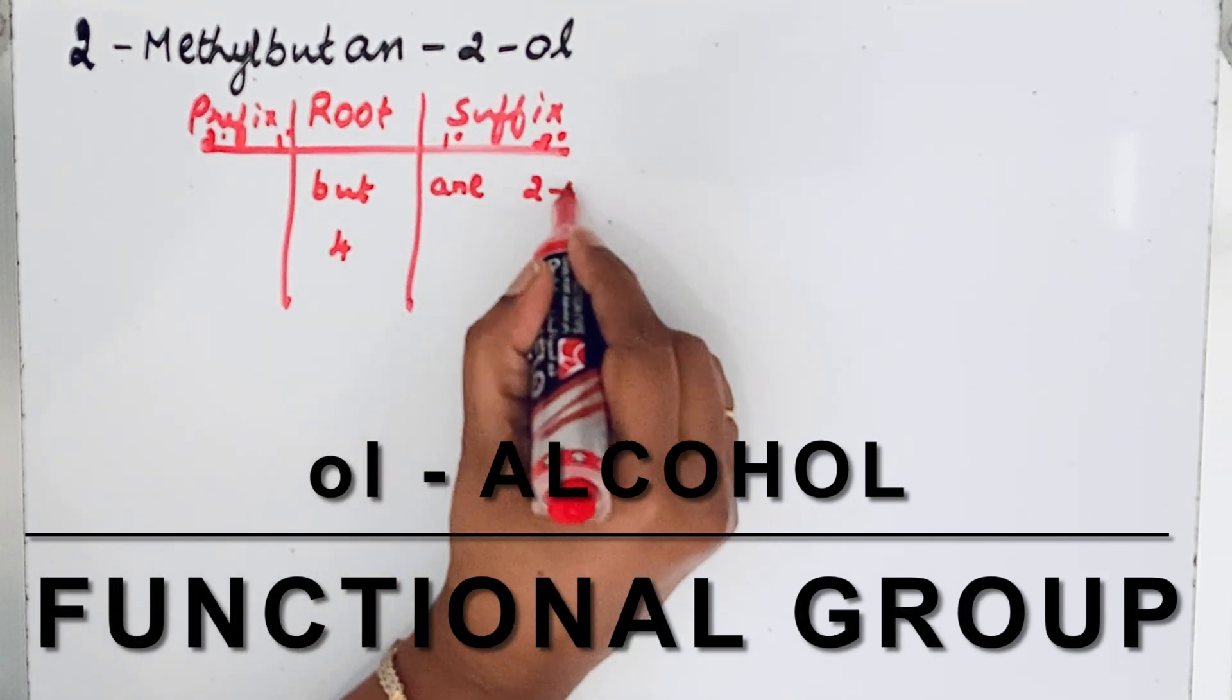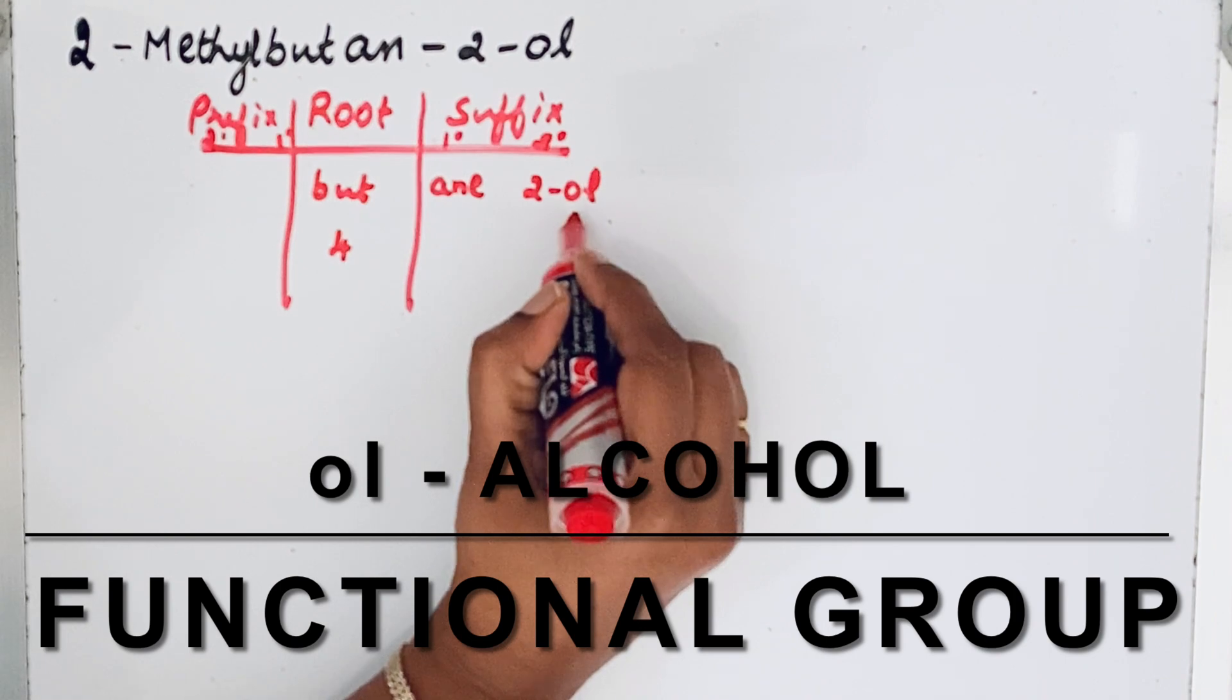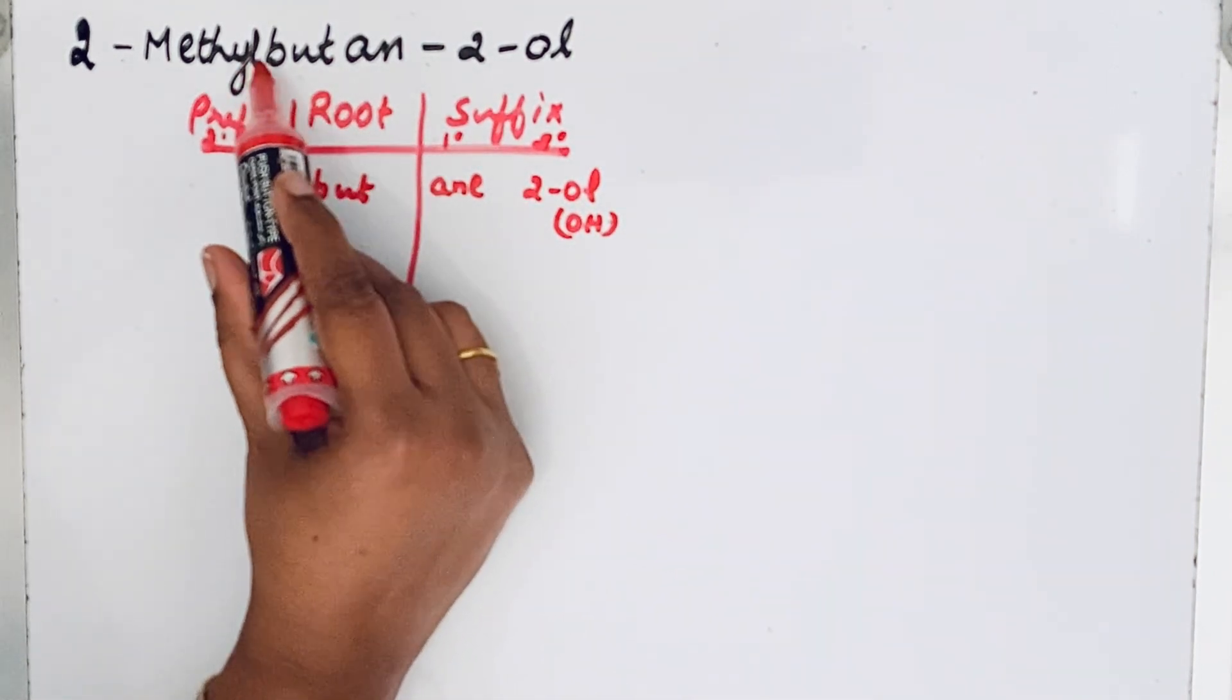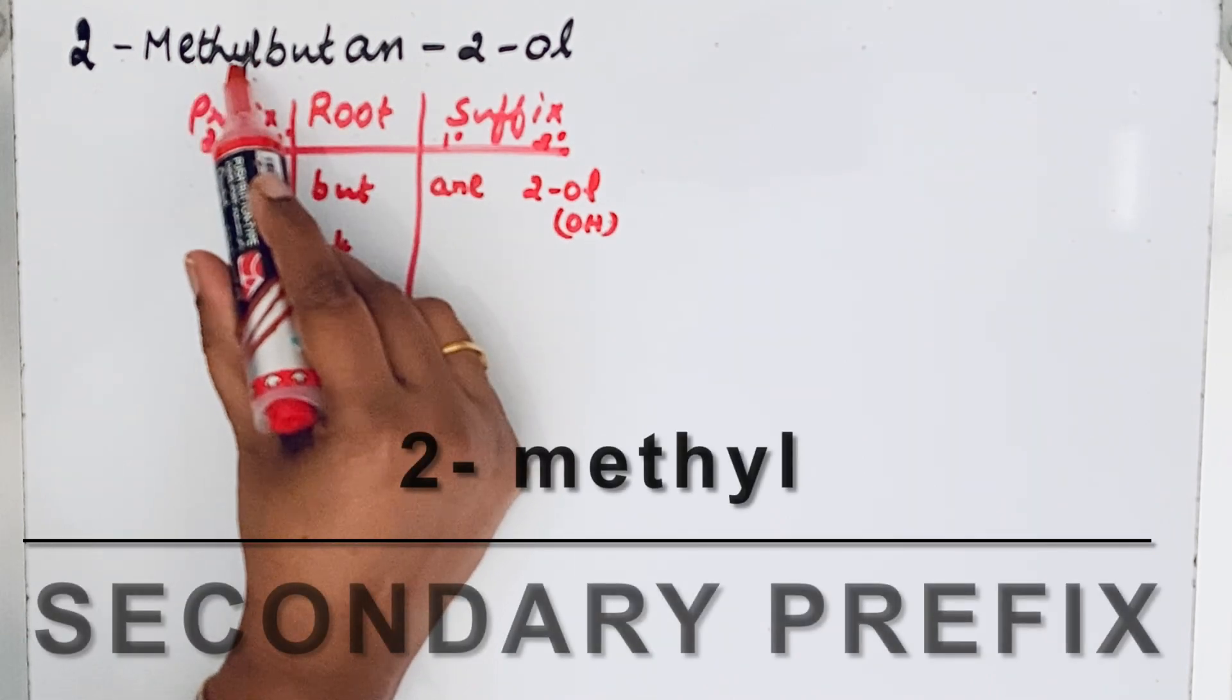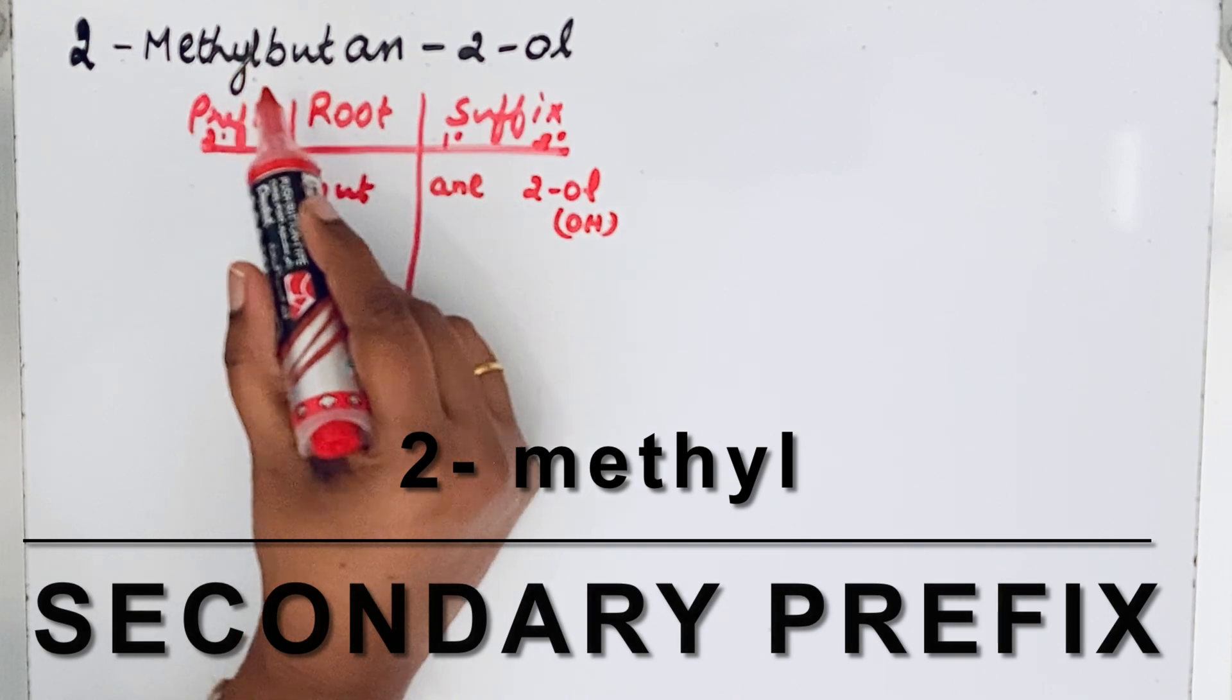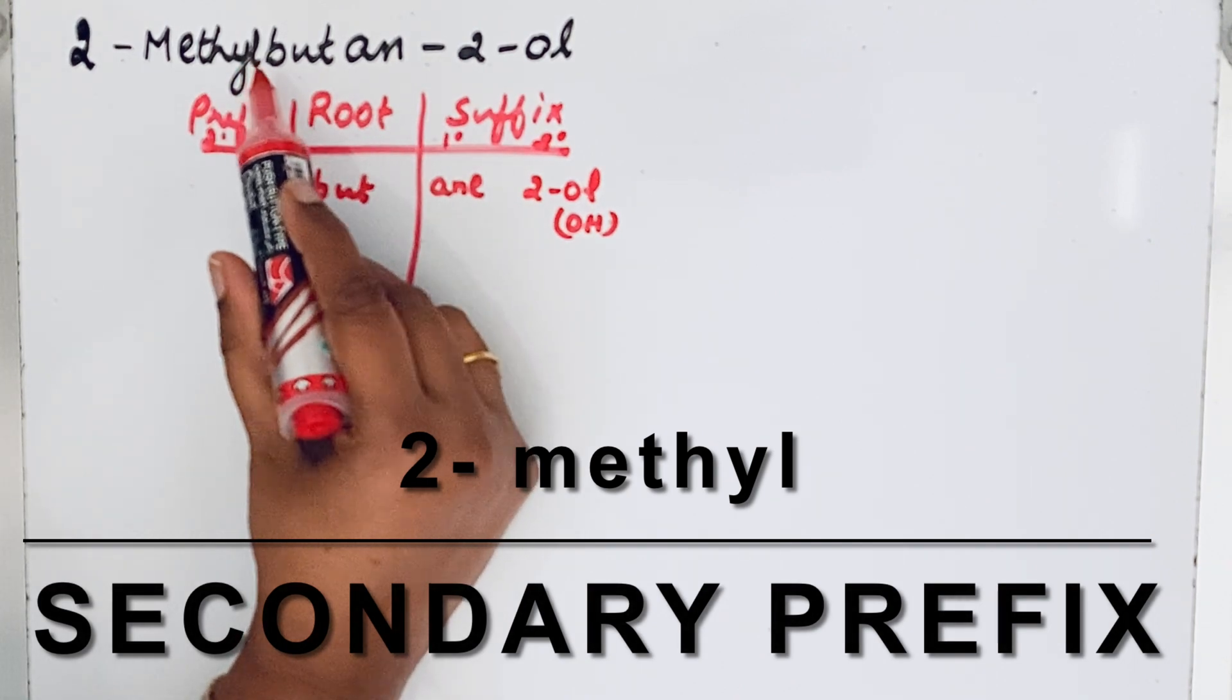Now come to that prefix. We can see 2-methyl. That means in the second position, methyl group is attached. This is not a cyclic compound, so that is why the word cyclo is absent.